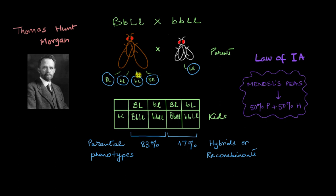However, instead of this 50-50 population, Morgan got way more parental lookalikes compared to the hybrids. There were about 83% parental lookalikes, carried out by these two gametes, and the hybrids were a mere 17%, taken care of by these two gametes.